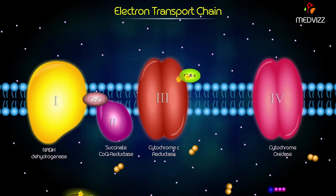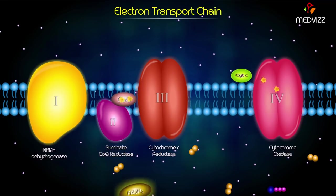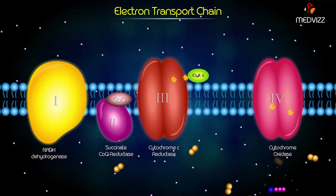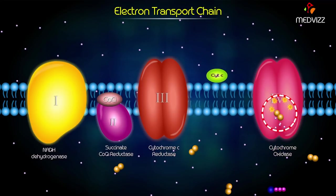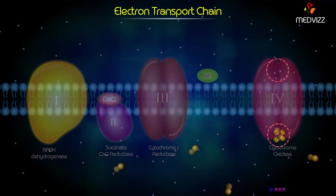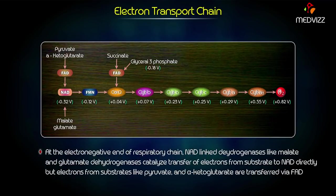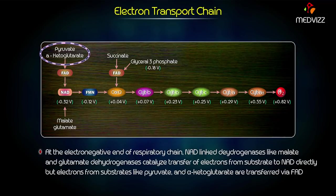Coenzyme Q also collects electrons from FAD. The transfer of electrons from substrates to NAD and FAD is catalyzed by dehydrogenases. At the electronegative end of the respiratory chain, NAD-linked dehydrogenases — malate and glutamate dehydrogenases — catalyze the transfer of electrons from substrates to NAD directly. But electrons from substrates like pyruvate and alpha-ketoglutarate are transferred via FAD.